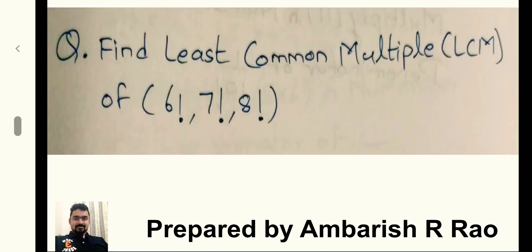Find the least common multiple LCM of 6 factorial, 7 factorial, and 8 factorial.